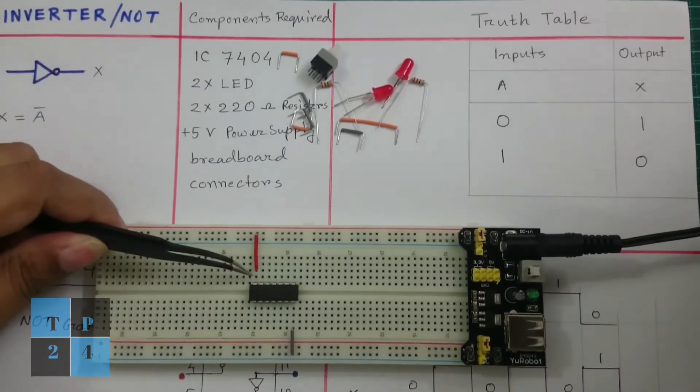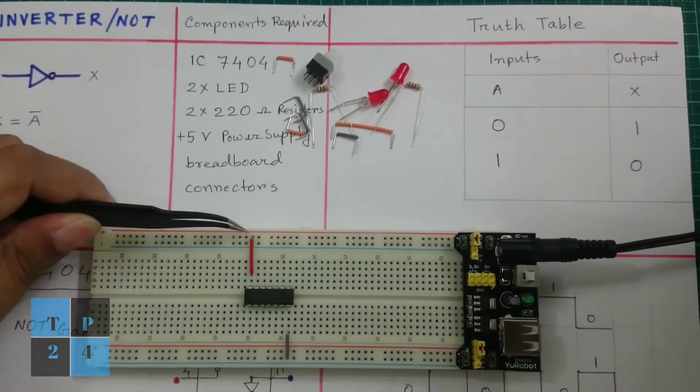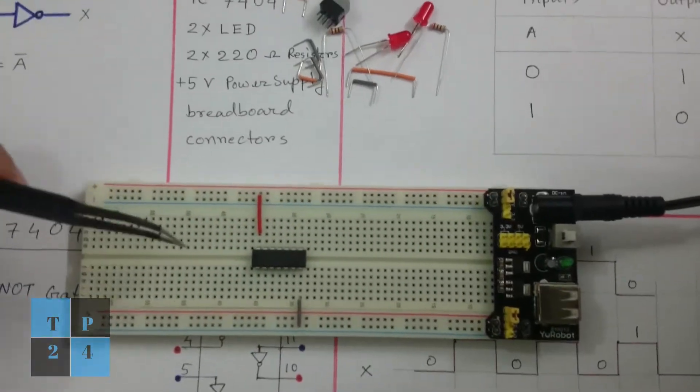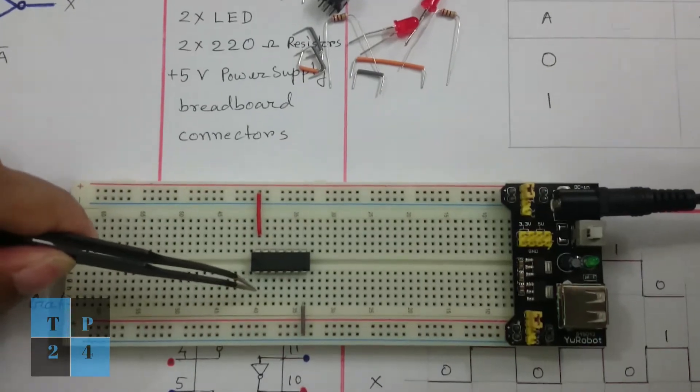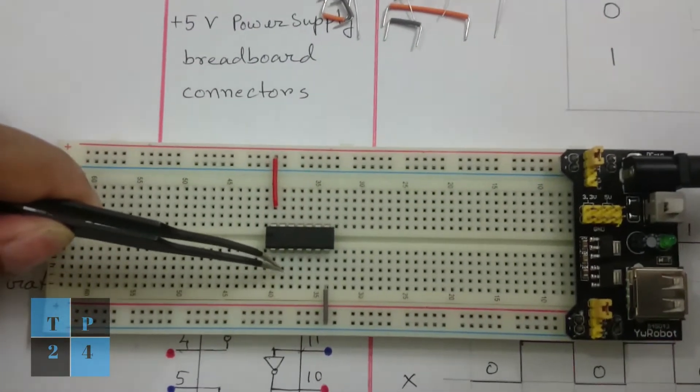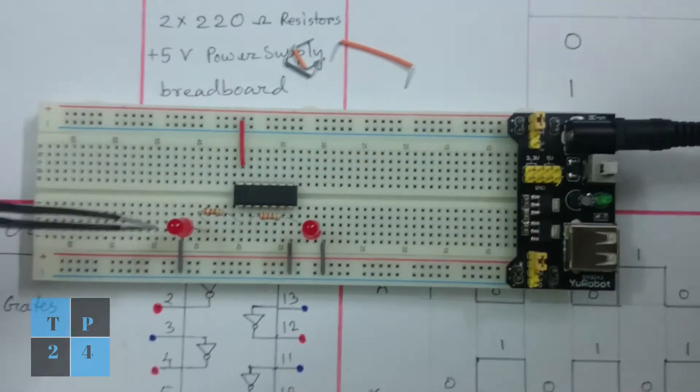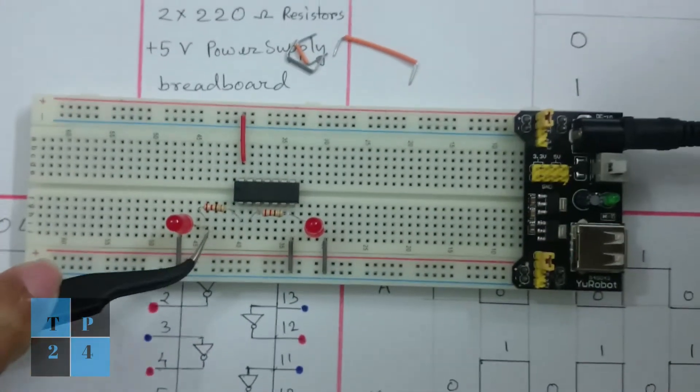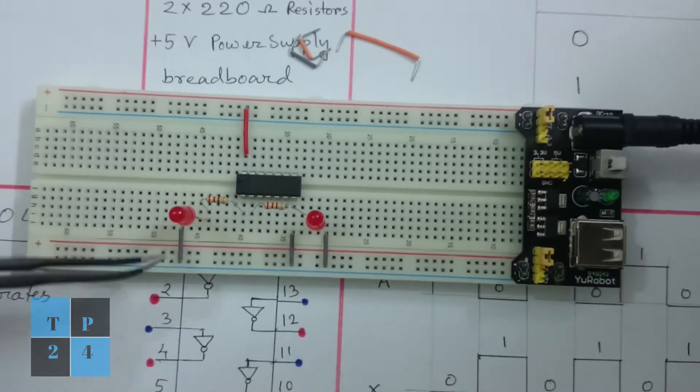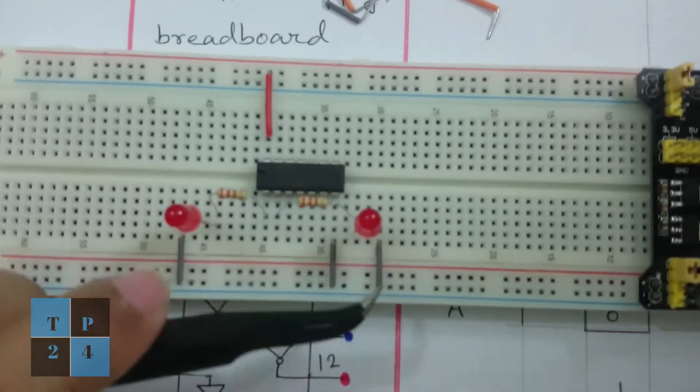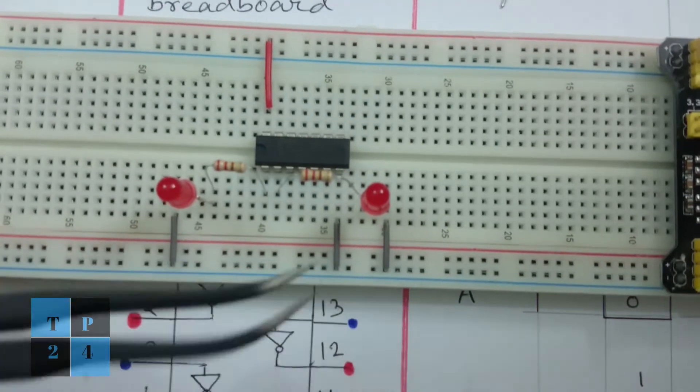I have connected pin number 14 of this IC to the positive rail and pin number 7 to the ground. I am going to put two resistors on pin number 1 and pin number 2. Now I am going to put two LEDs. This is the anode and this is the cathode and I grounded it here. Similarly, this is the anode and this is the cathode and I grounded it here.